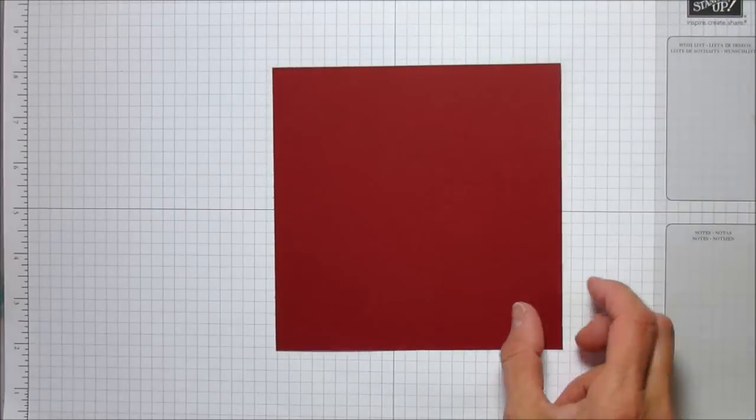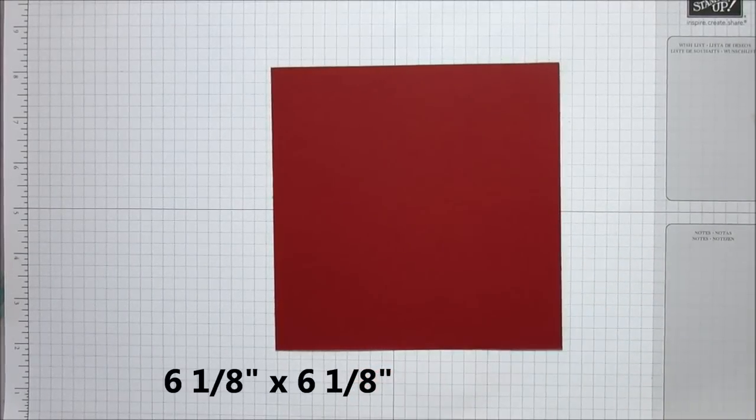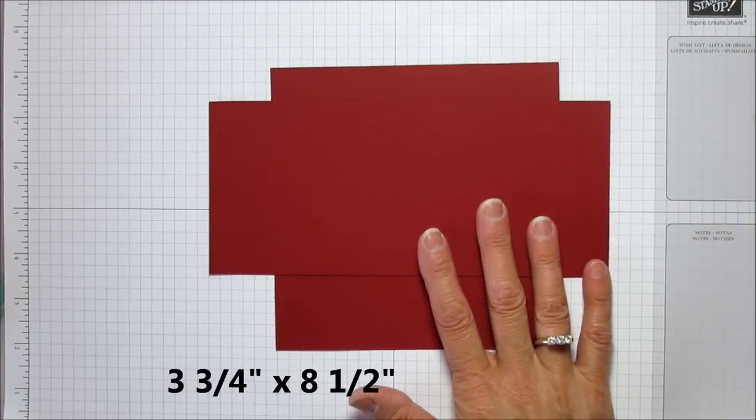For this one, you're going to need cherry cobbler cardstock that's 6⅛ by 6⅛, then another piece that's 3¾ by 8½.